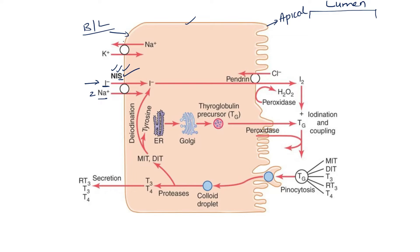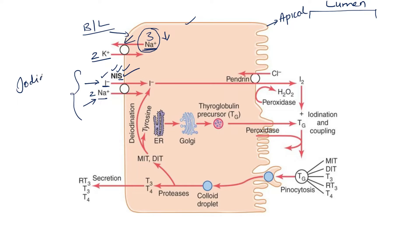The energy is derived from another pump in the basolateral membrane — the sodium-potassium ATPase pump. This pump moves three sodium from inside to outside, and two potassium from outside to inside. By constantly pumping sodium out, the intracellular sodium concentration decreases, creating a gradient. This gradient drives sodium — and along with it, iodide — into the cell. This step is called iodide trapping, and it is an active process.